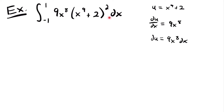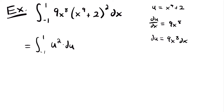Looking at our integral, do we see 9x to the 8th power dx? Yes — the dx is here, and 9 times x to the 8th is right here. So we can replace 9x to the 8th power dx with du, and replace the inside function x to the 9th plus 2 with u. We rewrite the definite integral as the integral from negative 1 to 1 of u squared times du.